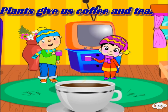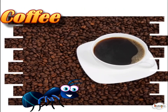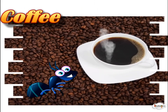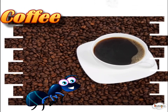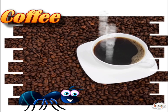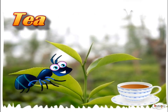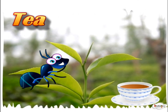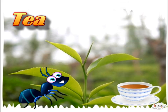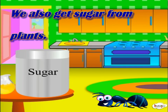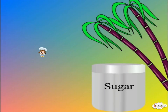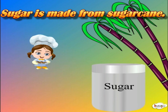Plants give us coffee and tea to drink. Coffee is made from the seeds of coffee plants. Tea is made from the leaves of tea plants. We also get sugar from plants. Sugar is made from sugar cane.